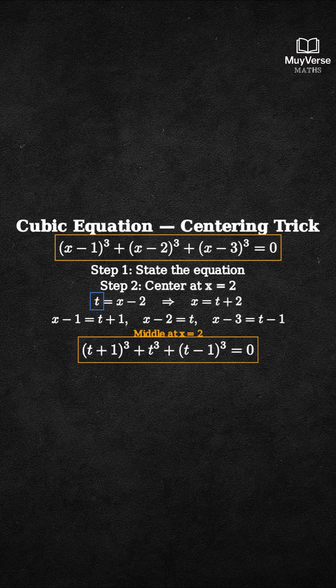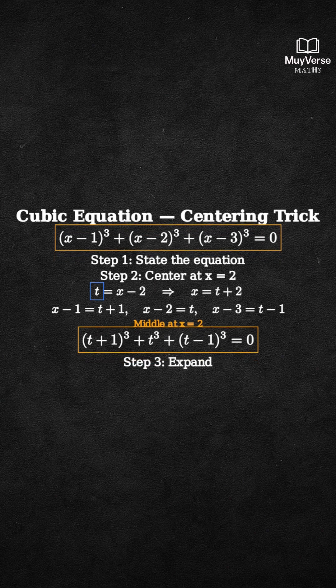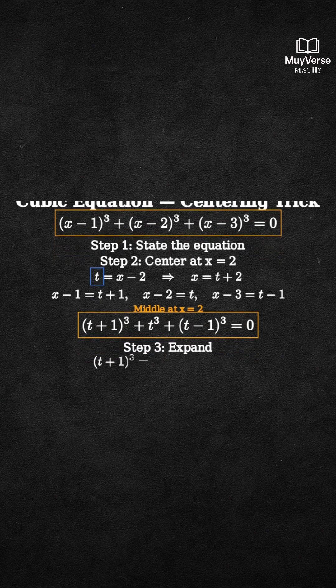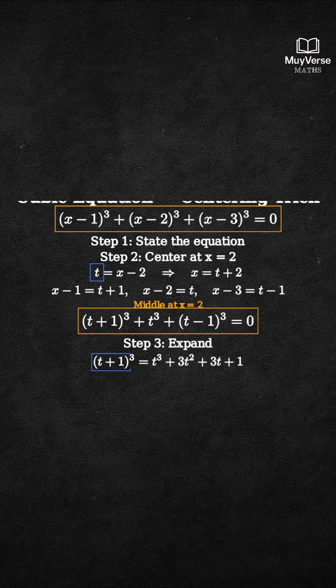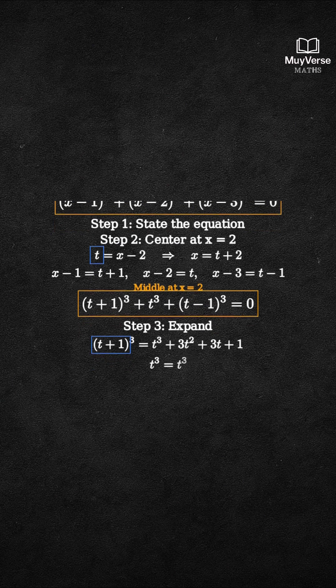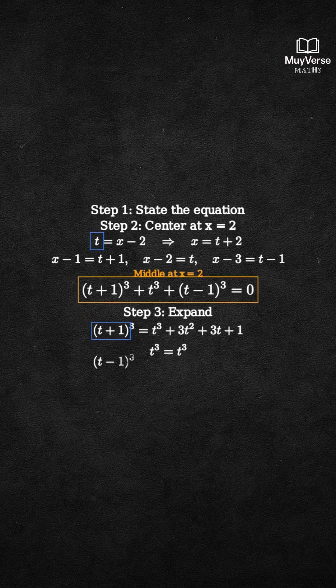Step 3. Expand each cube. t plus 1 cubed equals t cubed plus 3t squared plus 3t plus 1. t cubed is just t cubed. t minus 1 cubed equals t cubed minus 3t squared plus 3t minus 1.